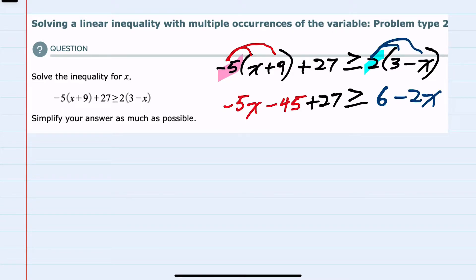So we've done some simplification on the left and on the right. There's more simplification I can do on the left. I have some like terms I can combine, bringing down the negative 5x. Negative 45 plus 27 would be negative 18.